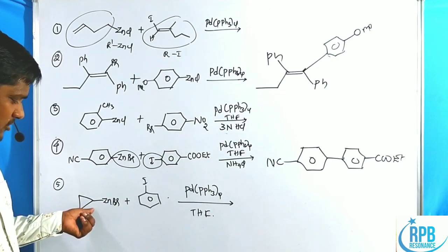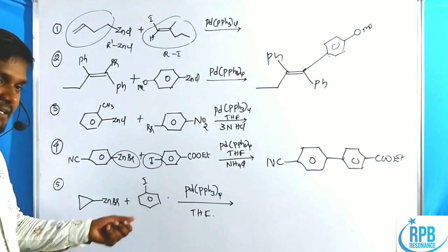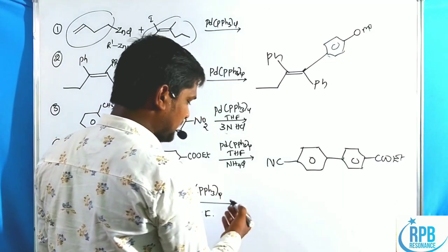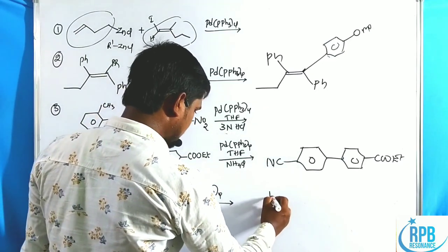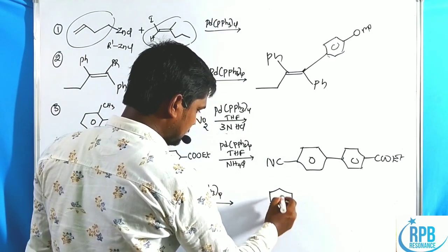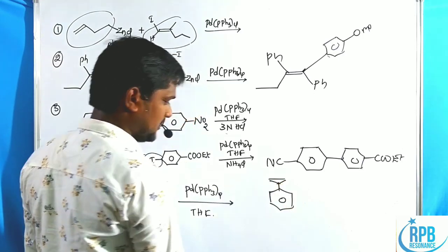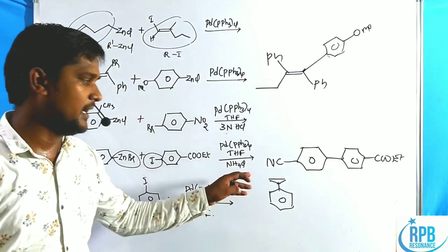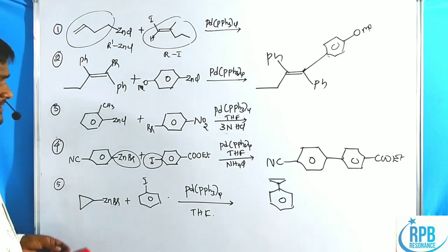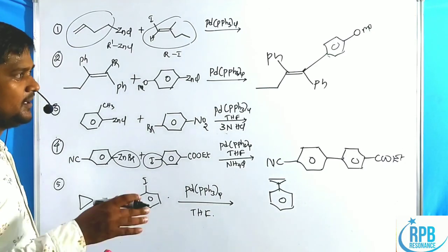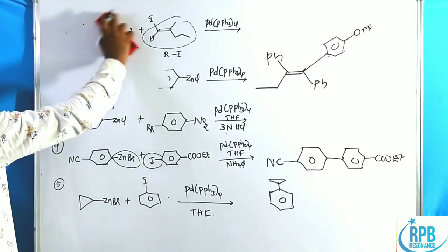In the fifth example, cyclopropylzinc bromide treated with phenyl iodide gives the product cyclopropylbenzene. These are simple examples of the Negishi cross-coupling reaction. Now let us discuss some other examples.